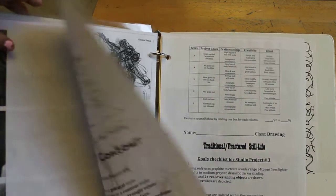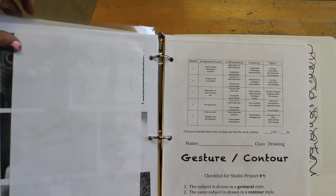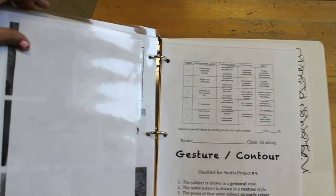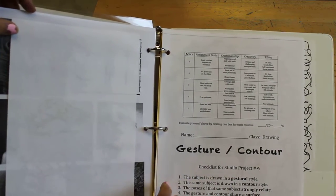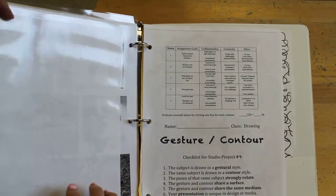So it may or may not be in there at the time I grade. And then this should be in there because we'll be working on that when we come back. Continuing on it. It's the Studio Project number four. Gesture Contour.